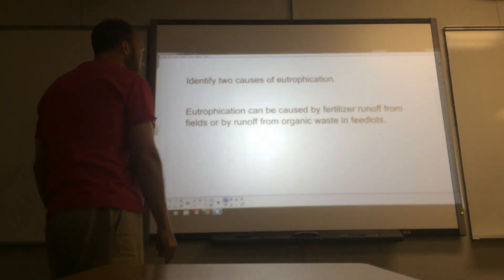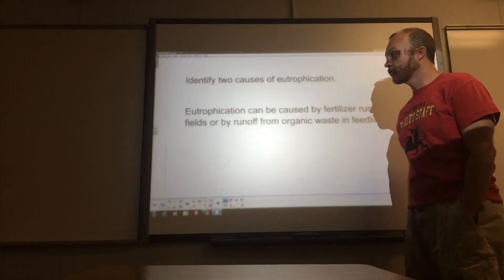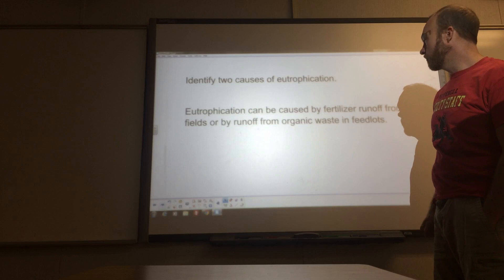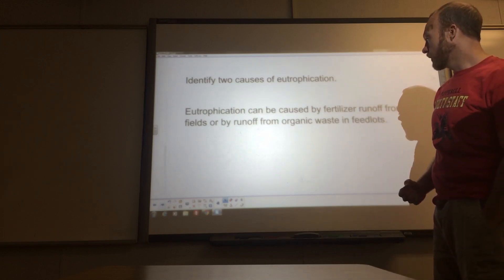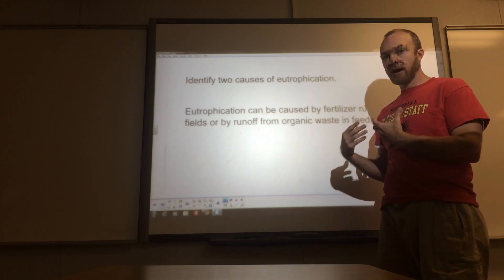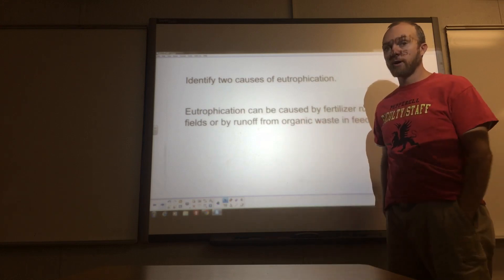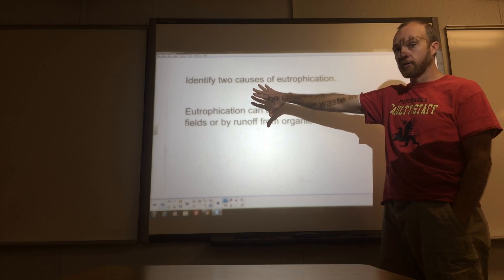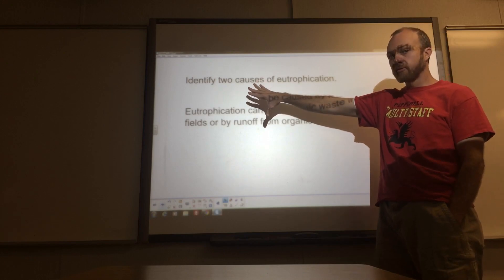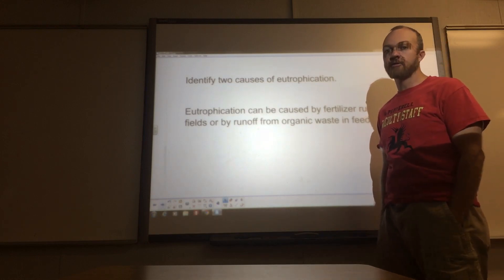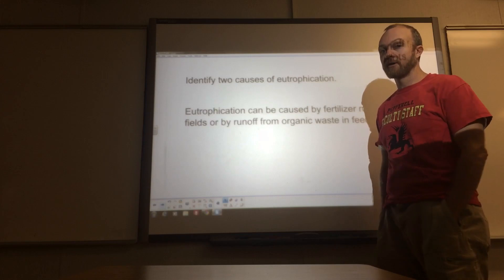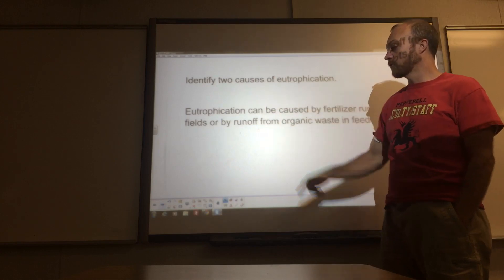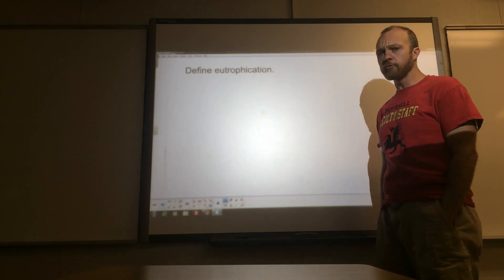Here's an example of how you could answer that question: 'Eutrophication can be caused by fertilizer runoff from fields or by runoff from organic waste and feedlots.' We're not discussing it, we're not describing it — we're merely identifying the causes. A lot of times AP questions will say 'identify and describe' or 'identify and discuss,' but if it just says identify, all you have to do is tell what it's looking for — in this case, causes of eutrophication.